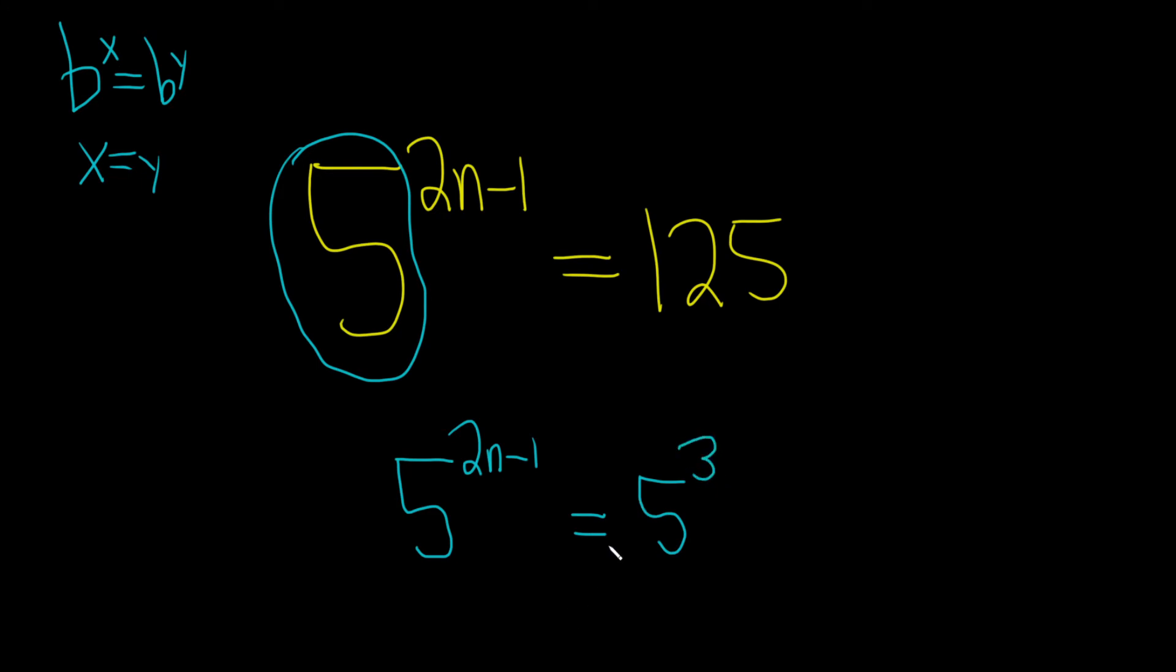And now we're in the situation that we want it to be in, right? We have b, which is 5, to the 2n minus 1 equals b, which is 5 to the 3. So the 5's go away, and you just get 2n minus 1 equals 3.